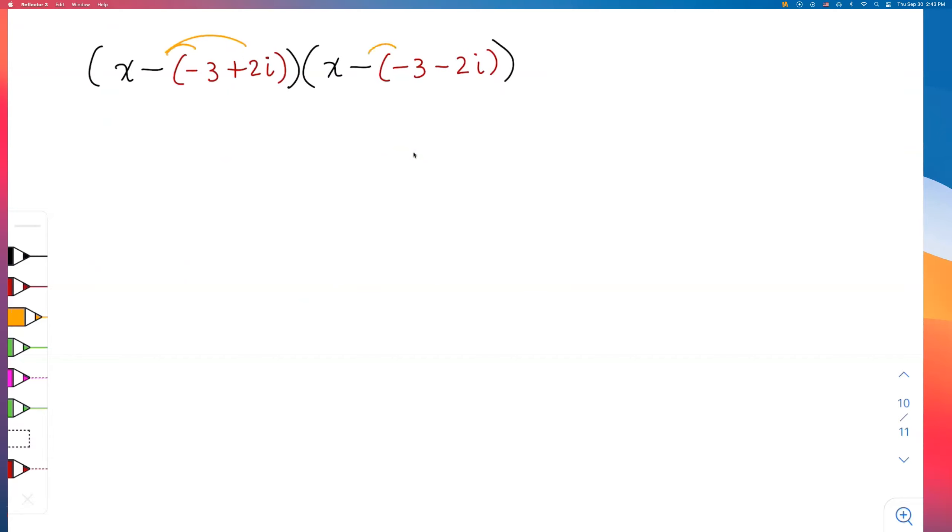But first of all, let me distribute to get this second inner parenthesis away. I get (x + 3 - 2i) and I'll get (x + 3 + 2i). I like to do my boxes.